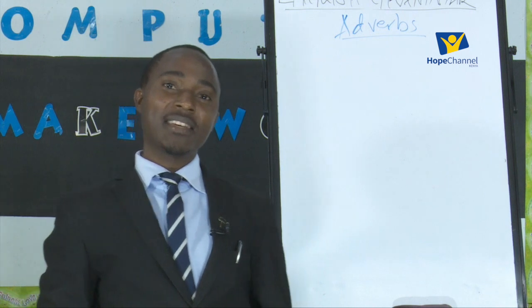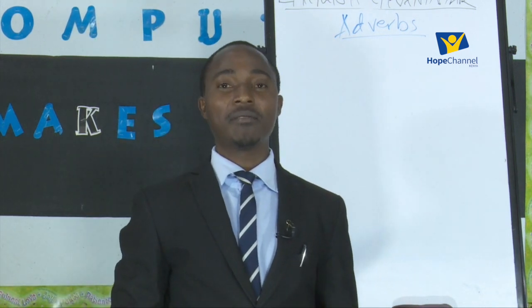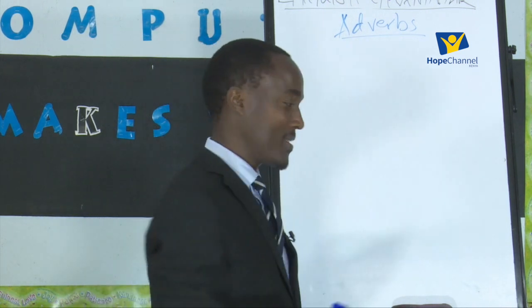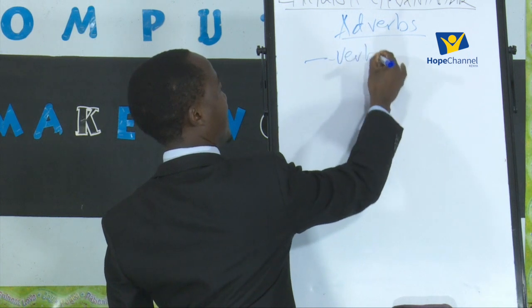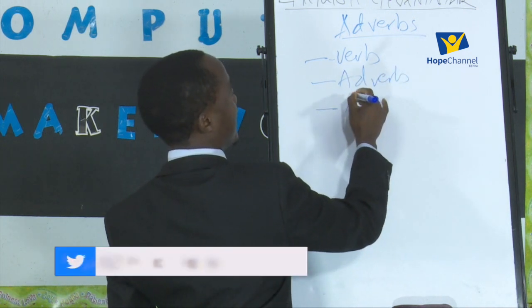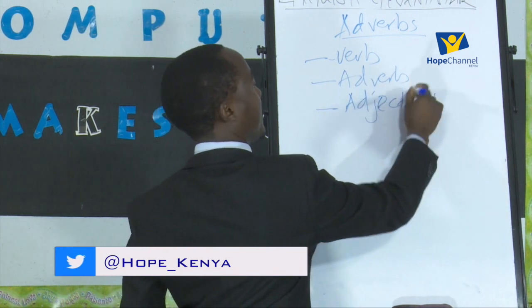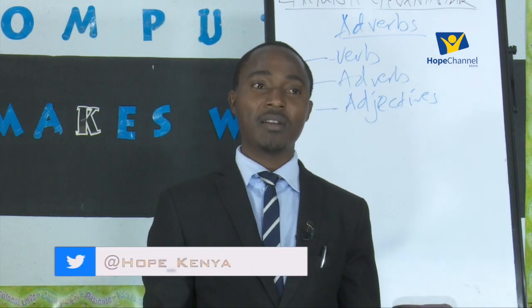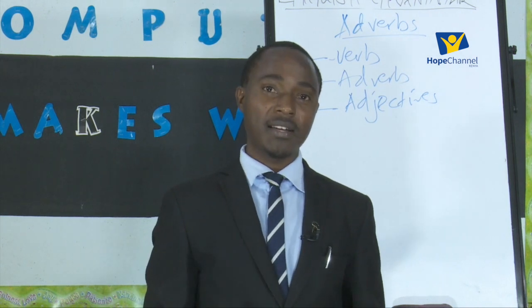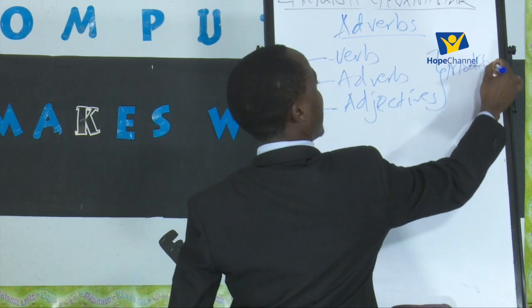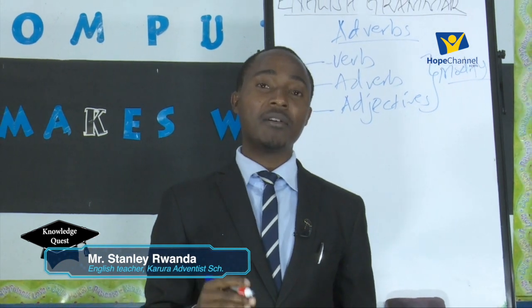We'll start by understanding the term adverb — what it means and how adverbs are used in sentences. An adverb is a word that is used to modify three things: one, a verb; two, an adverb; and three, an adjective. To modify means simply to add information — extra information — on that verb, on that adjective, or on another adverb.